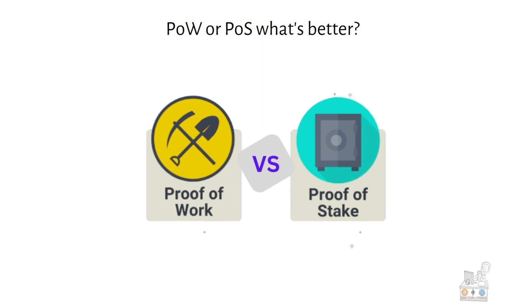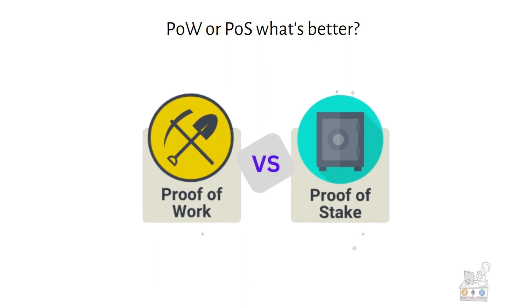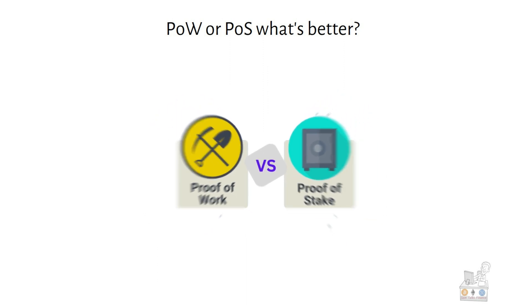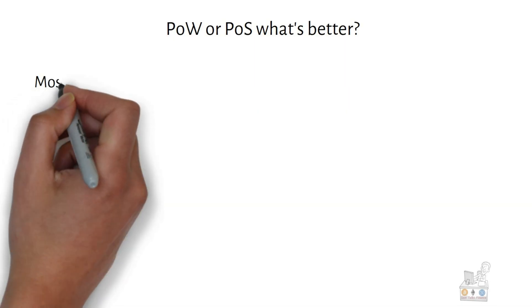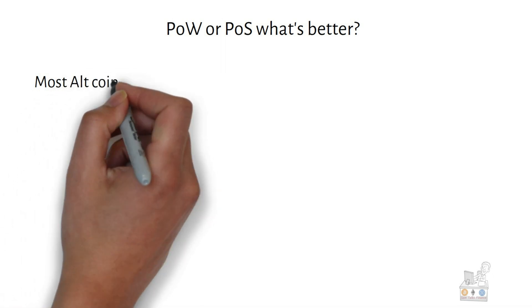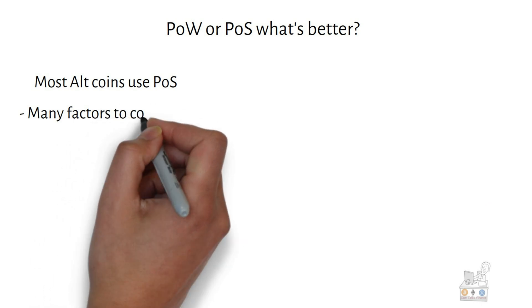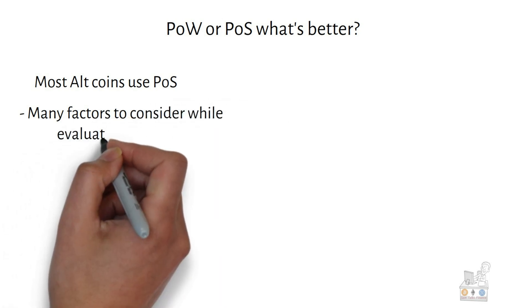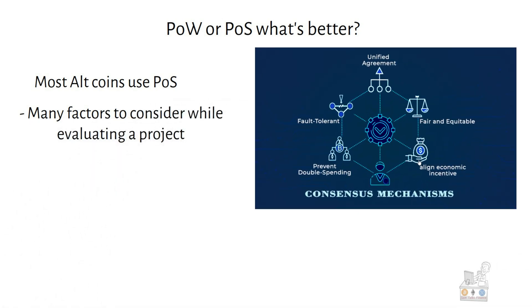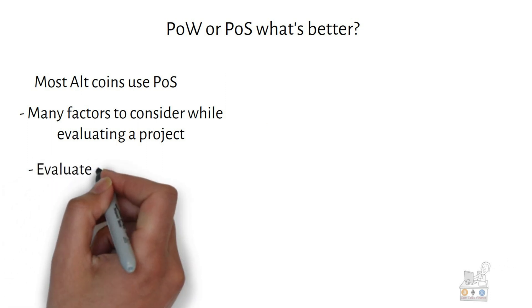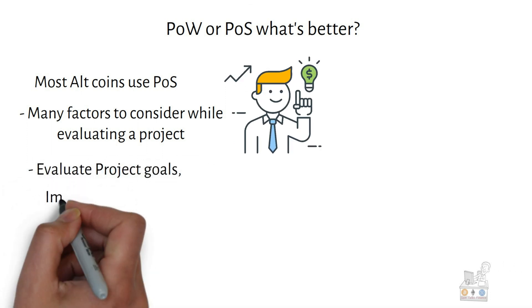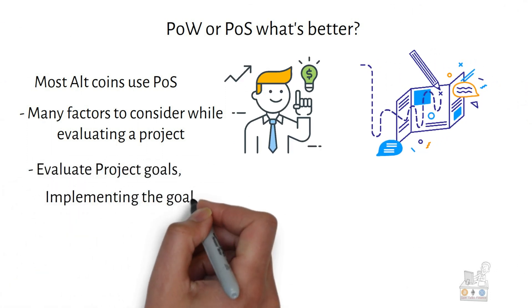Proof-of-stake and proof-of-work both are established in the crypto world. There is no clear winner. Altcoins can use proof-of-stake to operate after Bitcoin's release. If you evaluate a crypto project, consider the consensus mechanism. If you invest in a project, evaluate whether it can accomplish its goals.